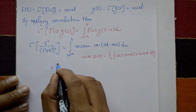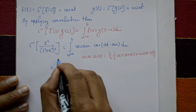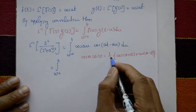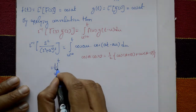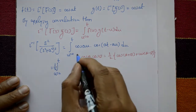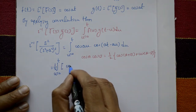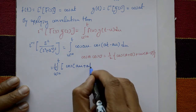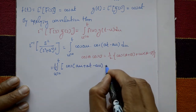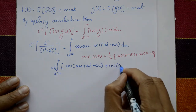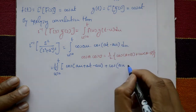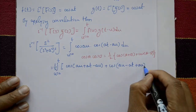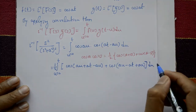The right-hand side becomes the integral from u = 0 to t of (1/2)[cos(au + at − au) + cos(au − at + au)] with respect to u, which simplifies using A = au and B = a(t − u).